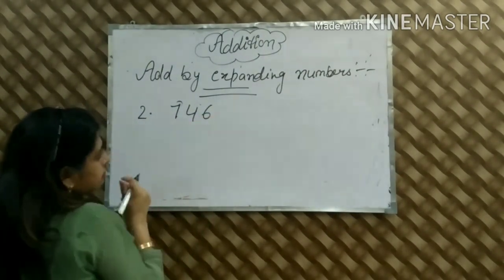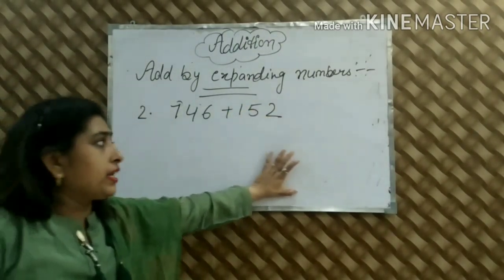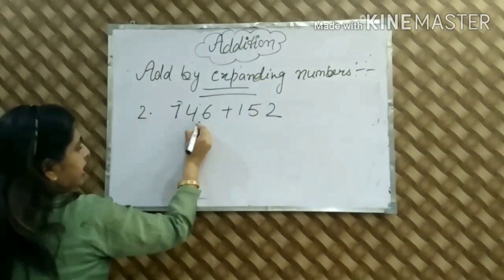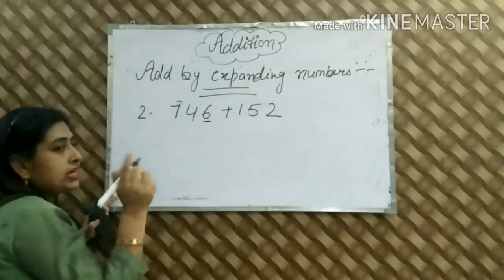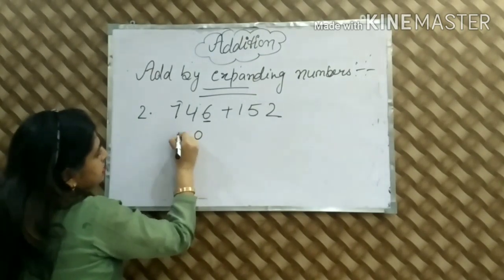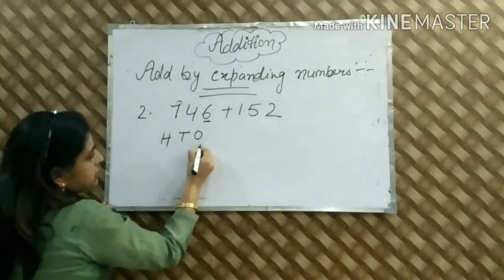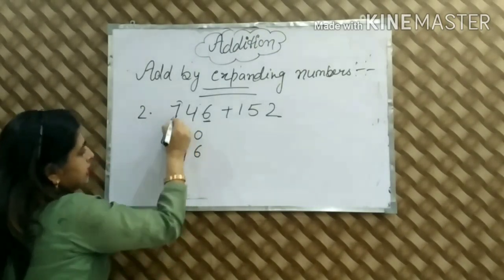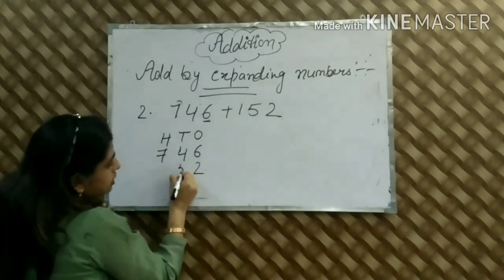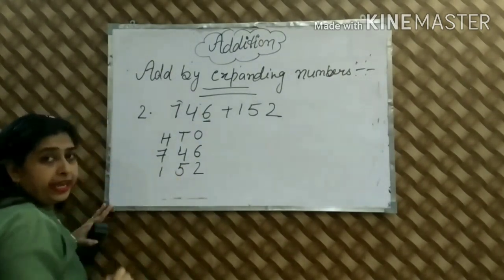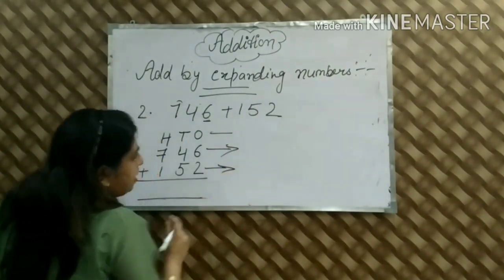We have 746 and 152. We have to add them using expanding numbers. First we write in short form. We use the periods: ones, tens, and hundreds. Since it is a 3-digit number, we go up to the hundreds place. We put the last digit in the ones place, then the tens place, and the hundreds place. For 152: ones place is 2, tens place is 5, and hundreds place is 1. We find it in both short form and expanding form.